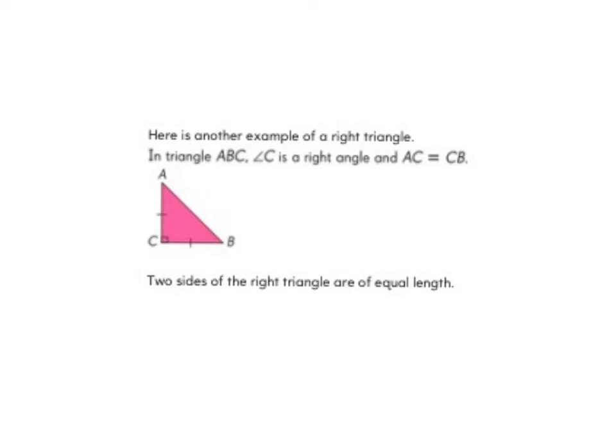Sometimes a right triangle can also be classified as an isosceles triangle. In this example, in triangle ABC, angle C is a right angle, and the side lengths AC and CB are equal to each other.